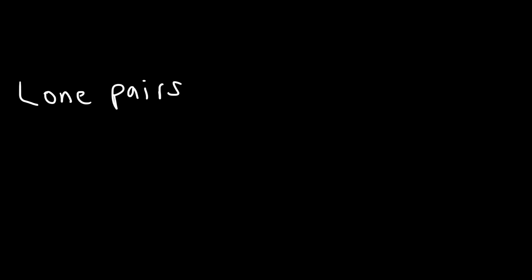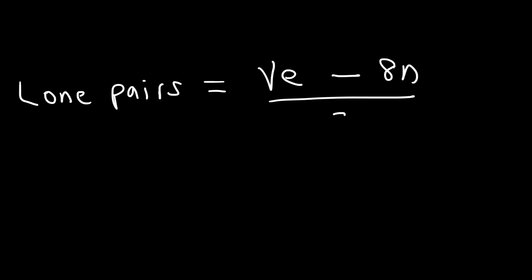In this video, I want to give you a formula that will help you calculate the number of lone pairs on the center atom of a molecule. The number of lone pairs on the center atom is equal to the total number of valence electrons in the molecule minus 8n divided by 2, where n is the number of atoms attached to the central atom.